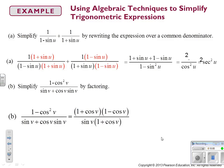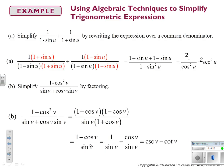If we factor out a sine v from the denominator, we get sine v times (1 + cos v). Looking at (1 − cos²v), we recognize it factors as (1 + cos v)(1 − cos v). That allows us to cancel the (1 + cos v), leaving (1 − cos v) over sin v. Separating this: 1 over sin v is cosecant, and cos v over sin v is cotangent, so we have two succinct trig functions.